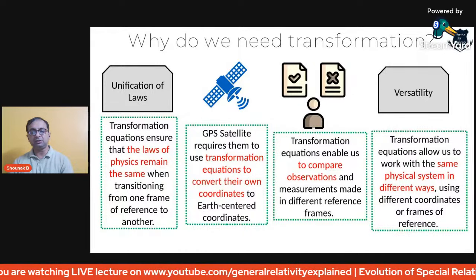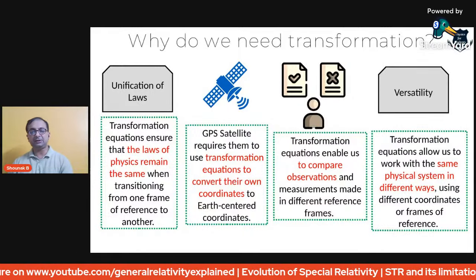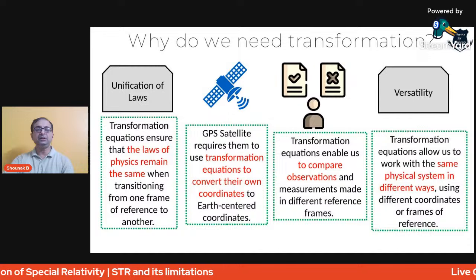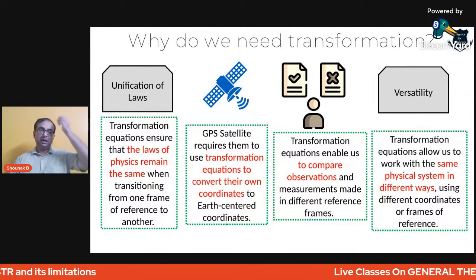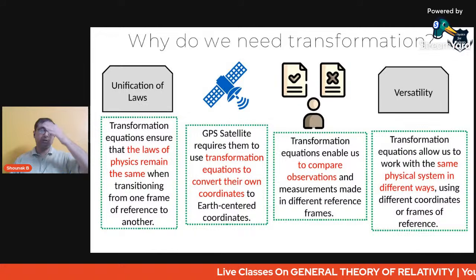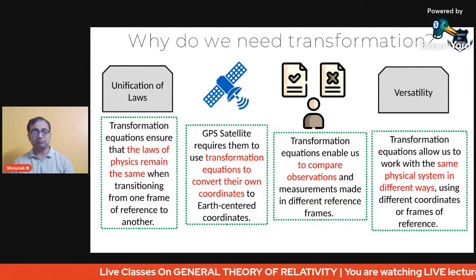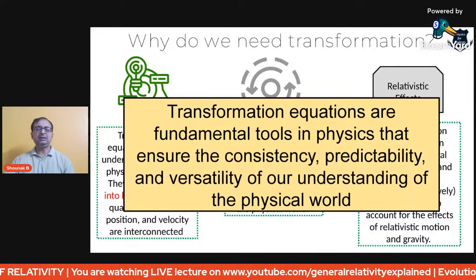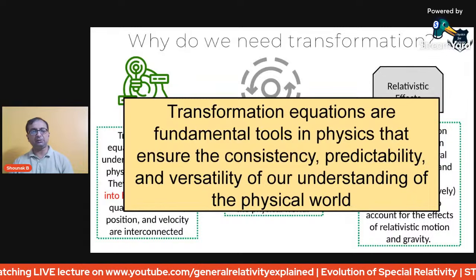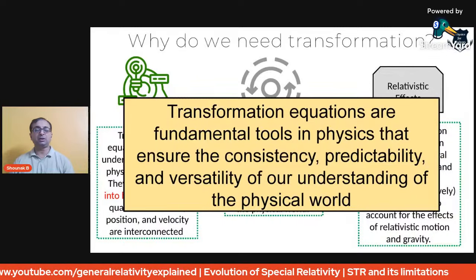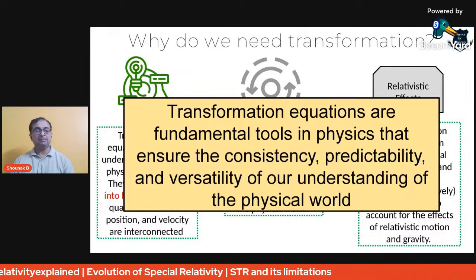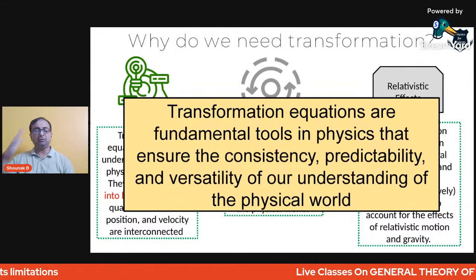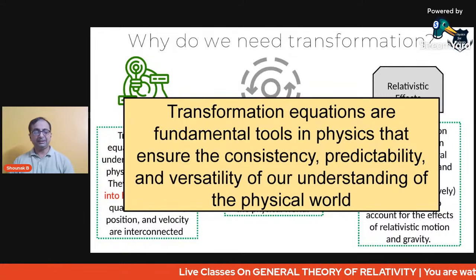Transformation equations allow us to work with the same system in different coordinate systems. They are fundamental tools of physics that ensure consistency — the laws of physics are consistent — predictability, and versatility. A mathematical model allows us to predict, and all are defined within our understanding of the physical world. This is a summary of why we need transformations.